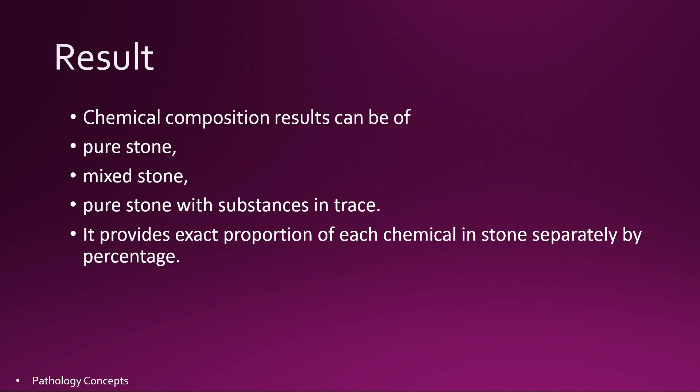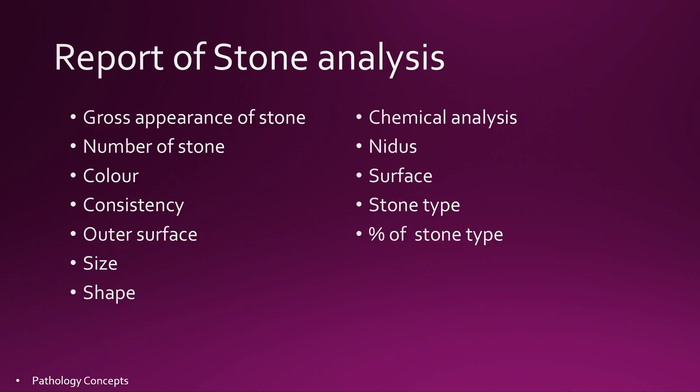The result of the test can be of pure stone, mixed stone, or pure stone with substances in trace amounts. It also provides the exact proportion of each chemical in the stone. The overall report of stone analysis contains gross appearance of the stone: number of stones, color, consistency, outer surface, size, and shape. The chemical analysis includes the stone type, details of surfaces, and percentage of each stone type.